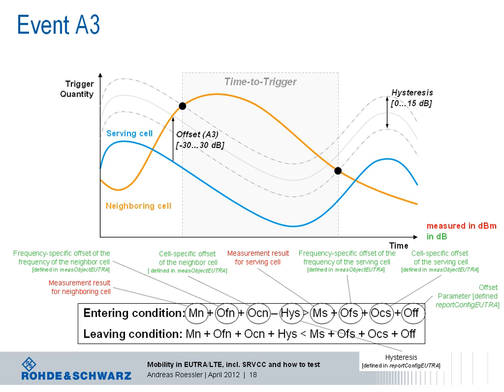An entering condition is calculated based on several parameters: the receive level for both serving and neighboring cells (measured as RSRP in dBm), frequency and cell-specific offsets expressed in dB, and the hysteresis. The same holds true for the leaving condition — same parameters but in an unequal relationship. If the trigger point is passed, the device is configured via the 'report config EUTRA' information element defining how often it must send a measurement report and the interval between reports — up to 64 reports with an interval between 120 milliseconds and 60 minutes.